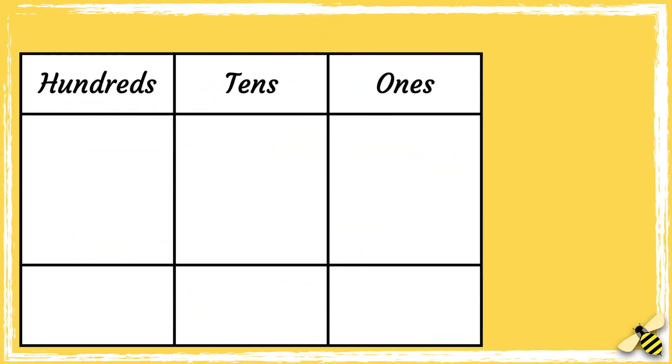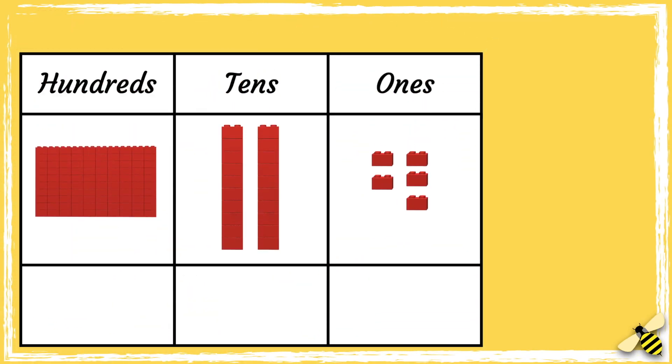Here is a place value grid. What number is shown on the grid? Let's start by looking at how many groups of hundred there are.